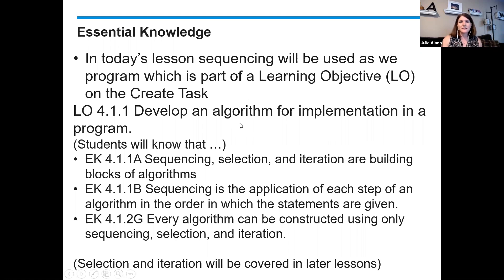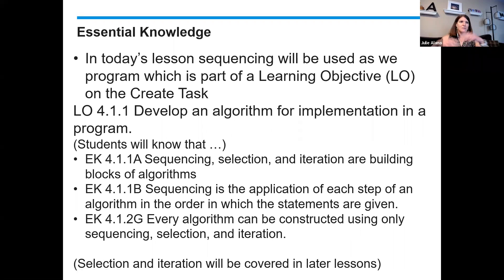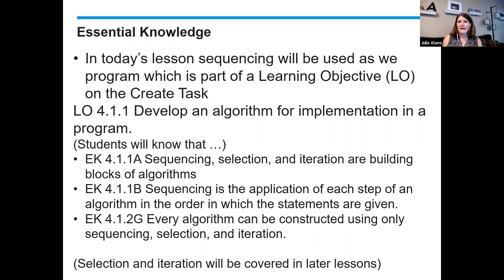Based on the previous lessons for CSP, you need to develop an algorithm for implementation in a program. That's one of the big parts of the create task. An algorithm can consist of sequencing, selection, and iteration. So what we're thinking about today is just putting some code in and making it run. We're just really getting used to the environment. We'll cover these other topics in the next lesson. Hopefully you have some knowledge of a programming language. Our goal is to just show you another way to use your programming knowledge.